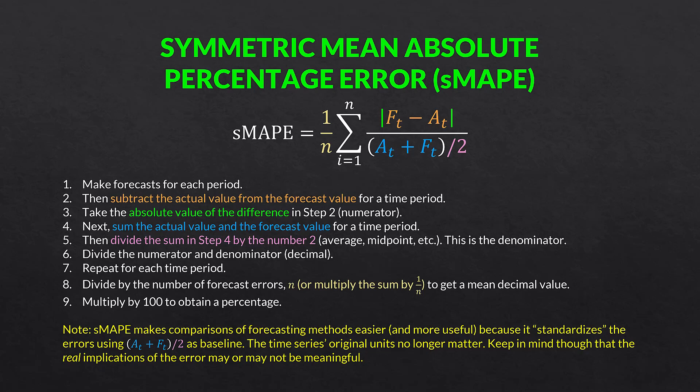SMAPE makes comparisons of forecasting methods easier and more useful because it standardizes the errors using the actual-plus-forecast average as a baseline. In this case, the baseline is the average or midpoint between the actual and the forecast, so the time series units no longer matter. But keep in mind that the real implications of the error may or may not be meaningful.